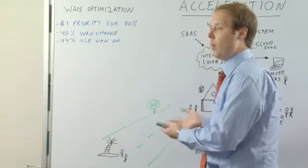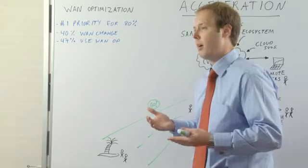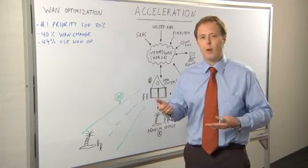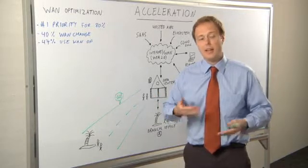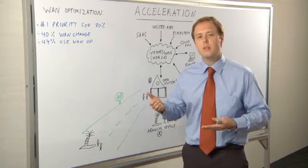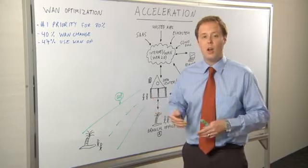So simply accelerating everything on the network leads to two problems for the enterprise. First, it accelerates unwanted traffic like malware and spyware and can also lead to WAN congestion. And secondly, it doesn't allow the enterprise to take advantage of reduced costs by blocking and controlling unwanted traffic.